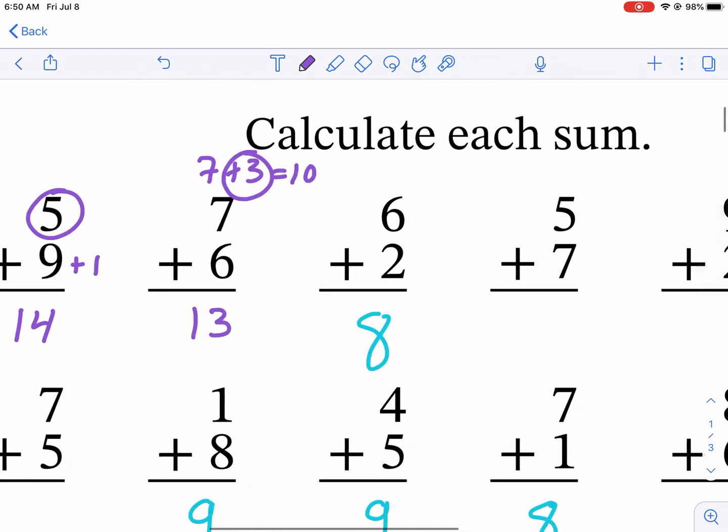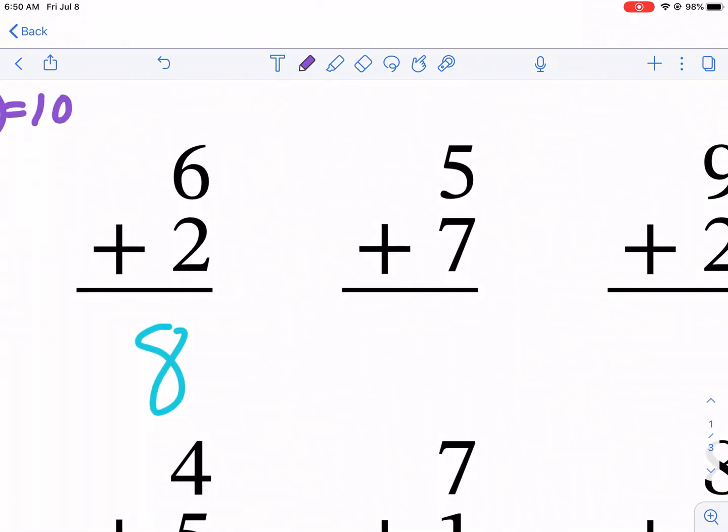I think that's kind of a useful strategy, especially with sevens. Seven plus three is 10. I have two more. So that's going to be 12.